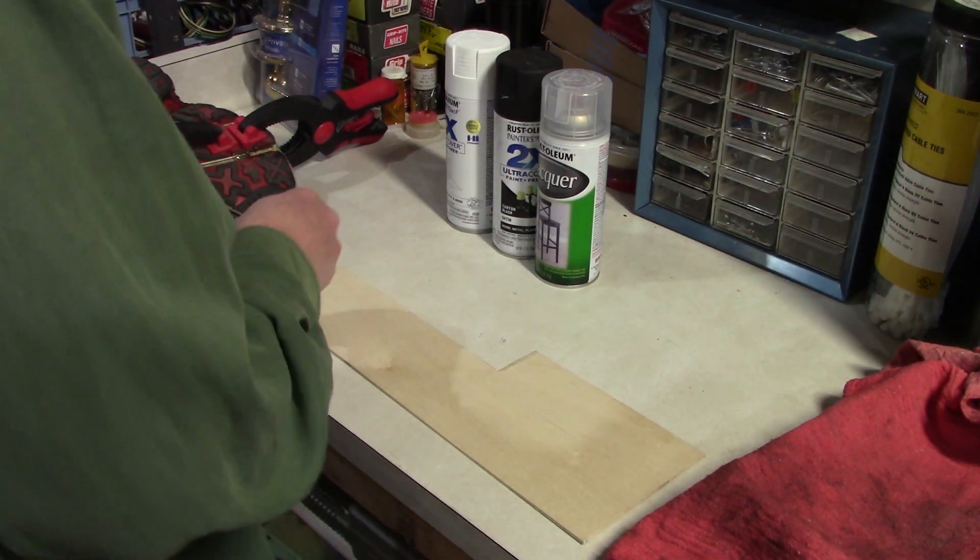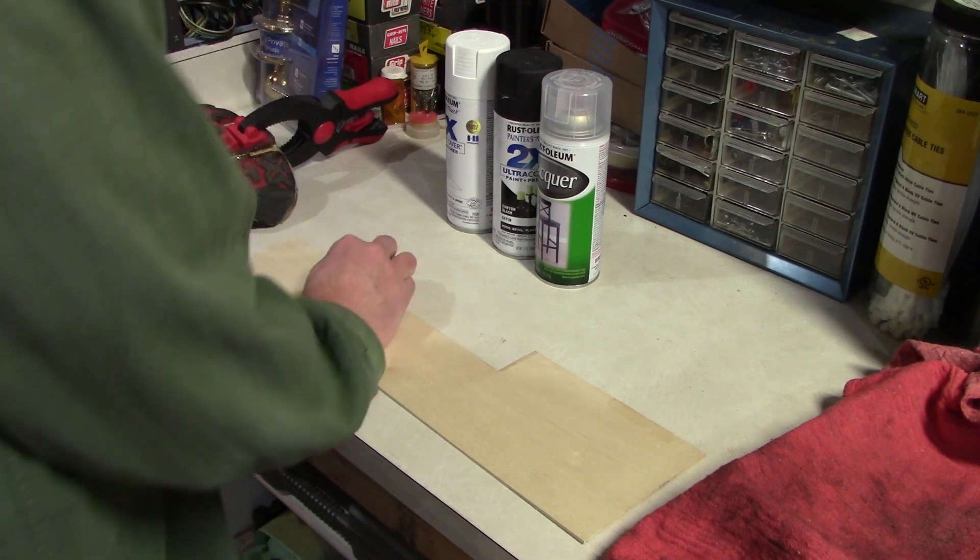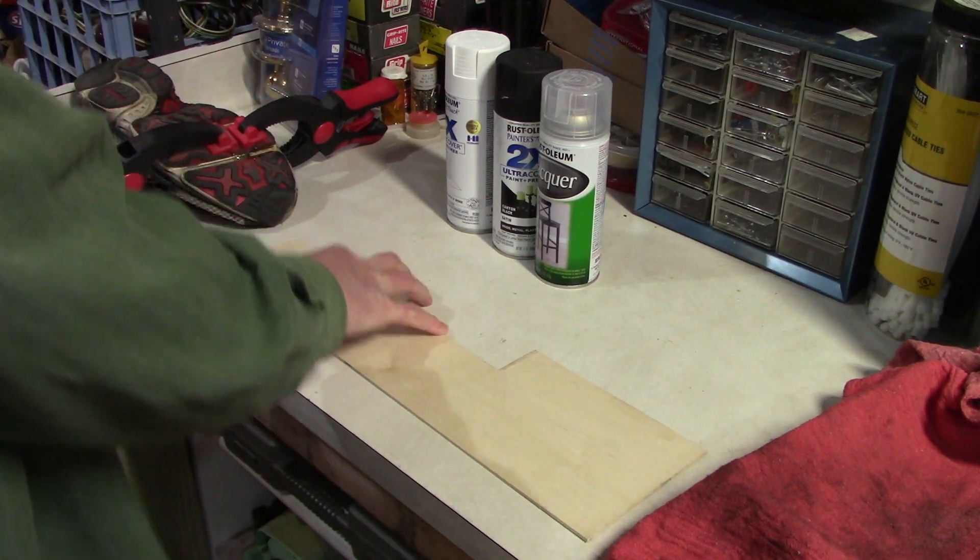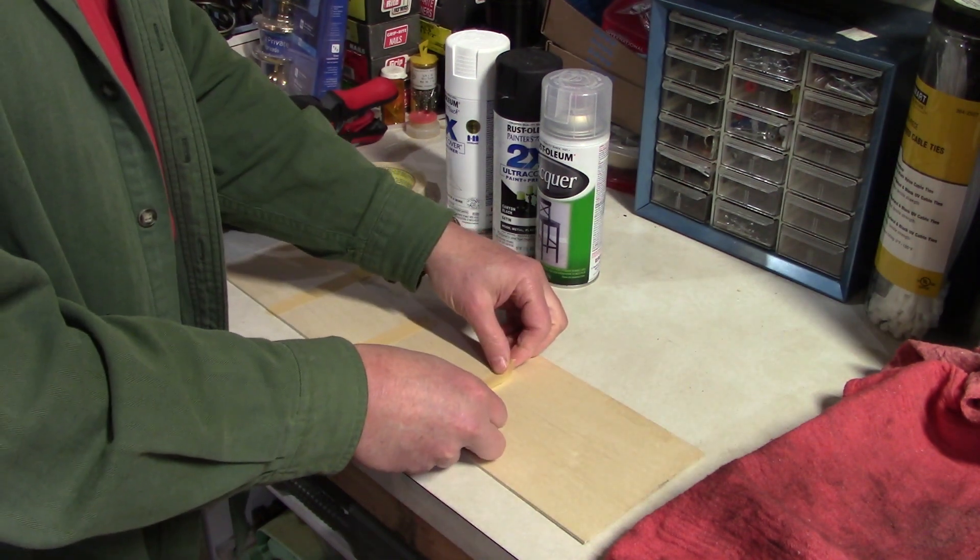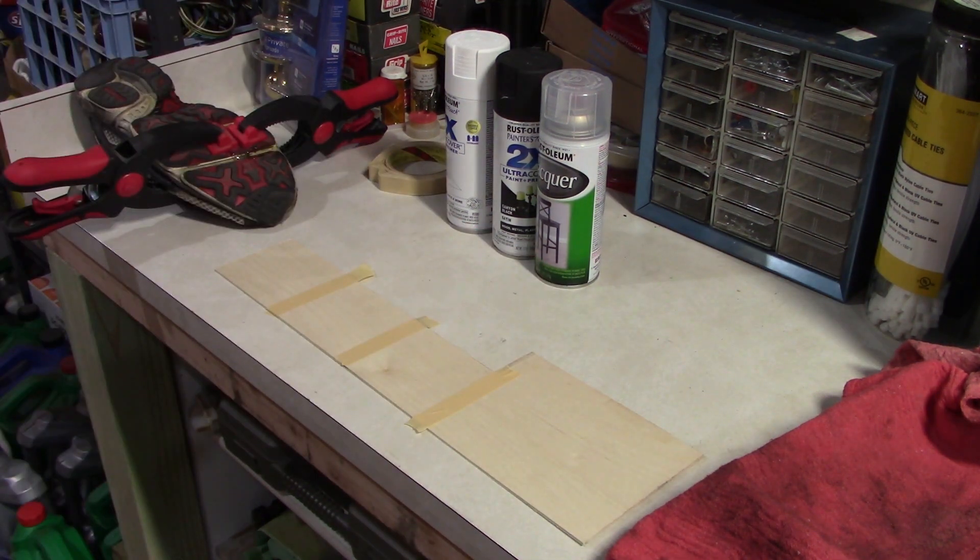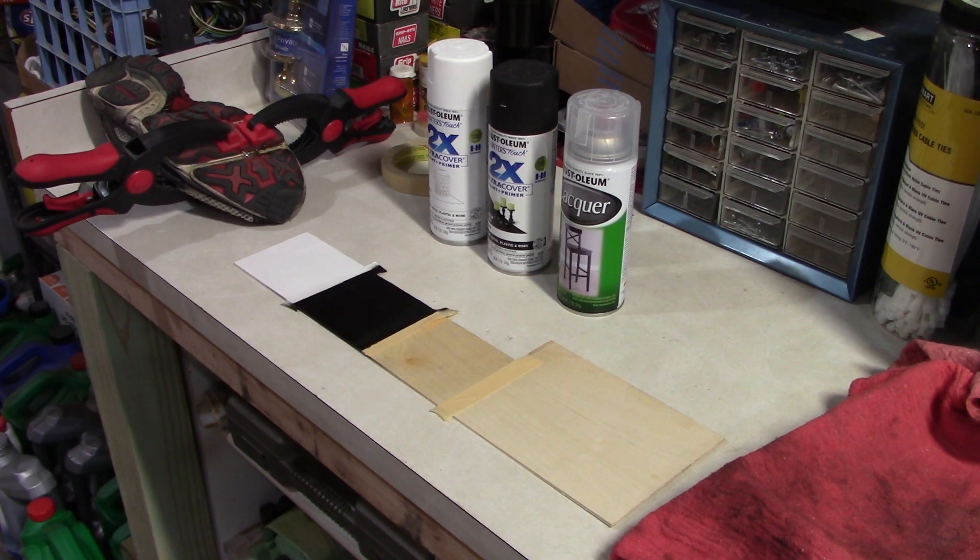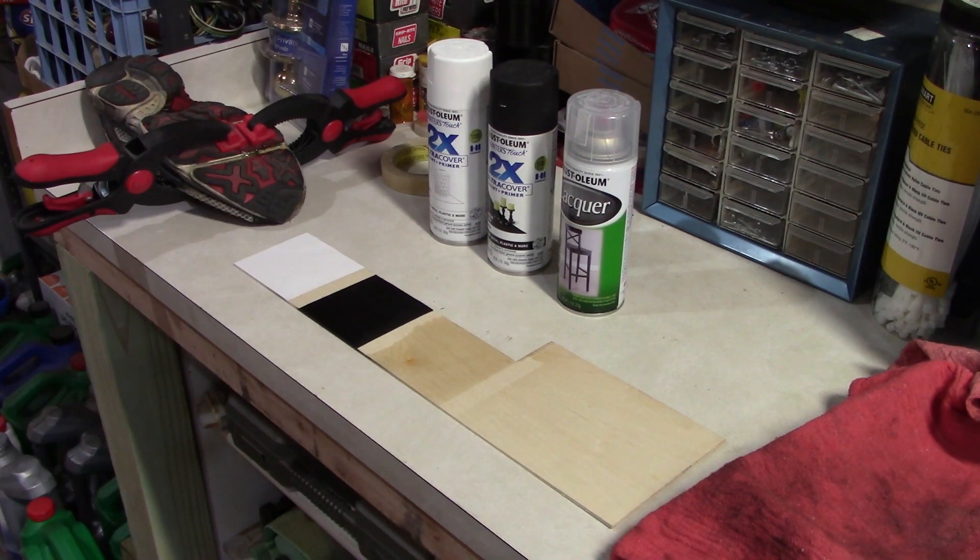Before we go to the laser, we'll have to get the paint on there. I'm going to put some masking tape down on the board to mask off the different sections so we can clearly see what's going on. Now that the sections are masked, we'll paint them. There we go. Remove that masking tape and we have our nice three sections: one white, one black, and one clear.